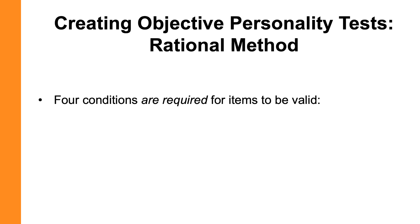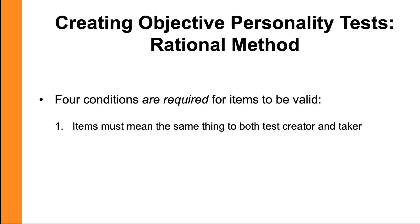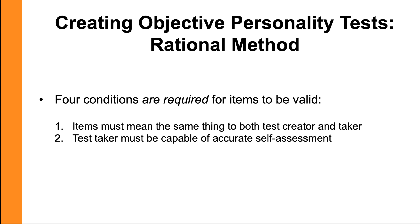Next I'll talk about the three methods for creating objective tests. But first, when creating items for any objective test, there are four conditions required for items to be valid. The first is that the item must mean the same thing to both the test creator and the taker. For example, the statement 'I believe white lies are never okay to tell' requires a shared understanding of the term 'white lie.' You need to make sure that phrase is understood by the test taker in the way the test creator intended.